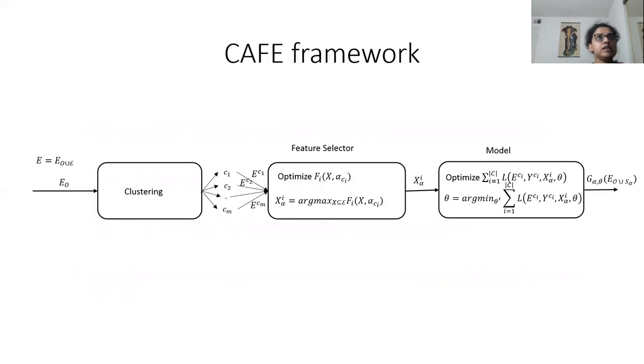While these types of work look at this problem from various angles in machine learning, we come up with a different approach based on an information-theoretic feature selector module and a usual classifier. This is our CAFE framework for cost-aware feature elicitation. First, we have a clustering module which clusters instances based on the observed feature set.